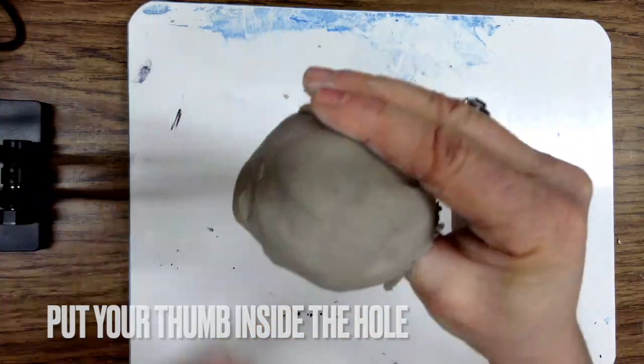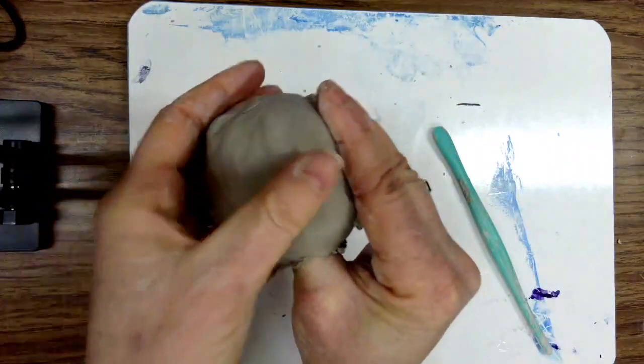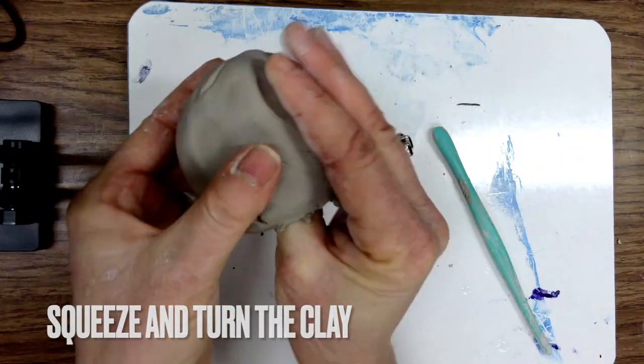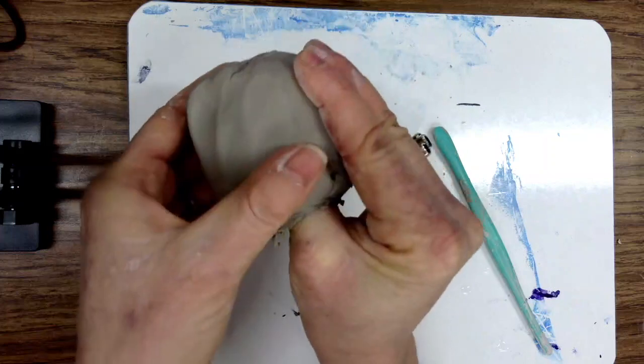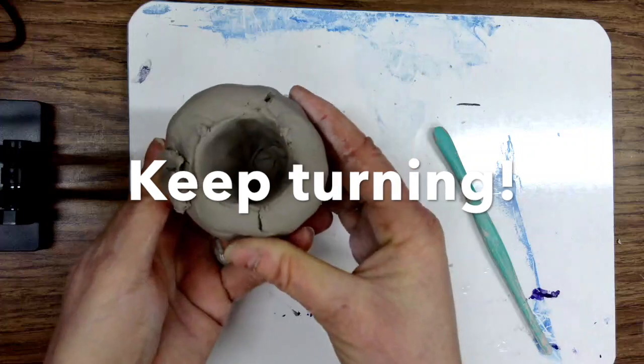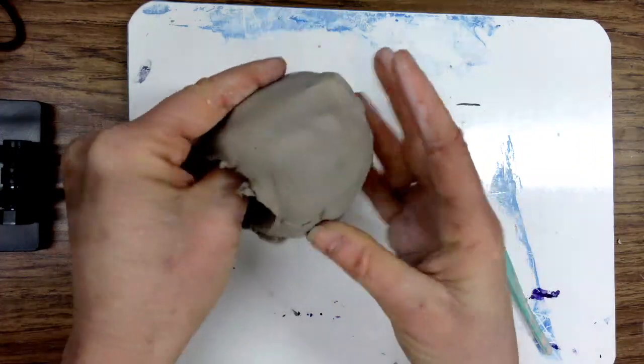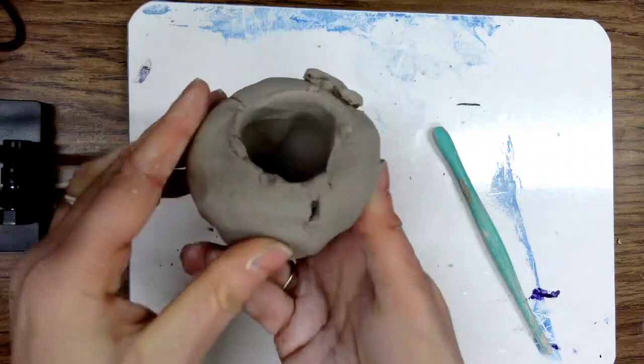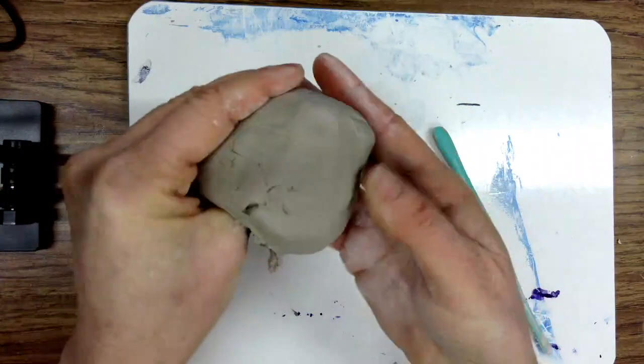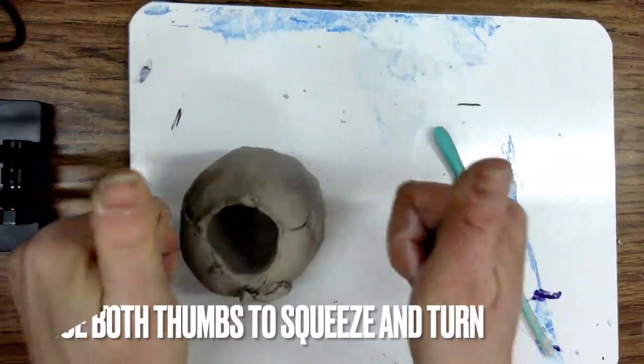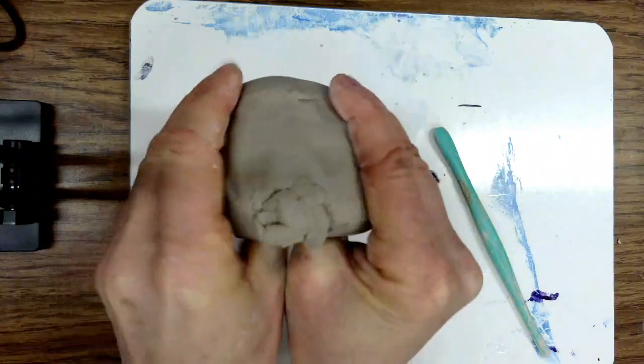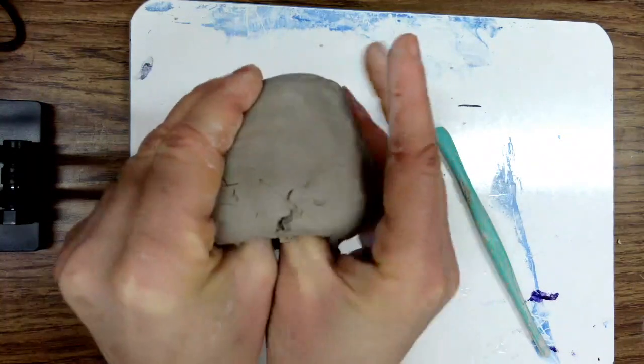When the hole is big enough, you can put a thumb inside. Squeeze the clay between your thumb and fingers and turn it over and over. Don't stop turning. When the hole is large enough, you can put two thumbs inside. Continue to squeeze and turn the clay.